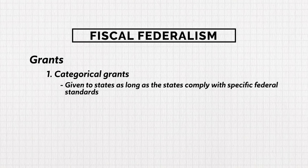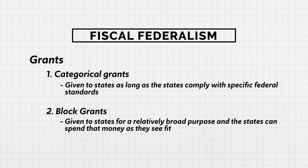Block grants are a little different. They still come from Congress to the states, but there are far fewer strings attached. These grants are given to states for a relatively broad purpose, and the states can spend that money as they see fit. For example, Congress might give a state money for crime prevention, and the state decides exactly how to spend it — maybe hiring more police officers, maybe investing in rehabilitation programs. The state has discretion, but there are still limits: they can't spend a crime prevention grant on highway improvement.